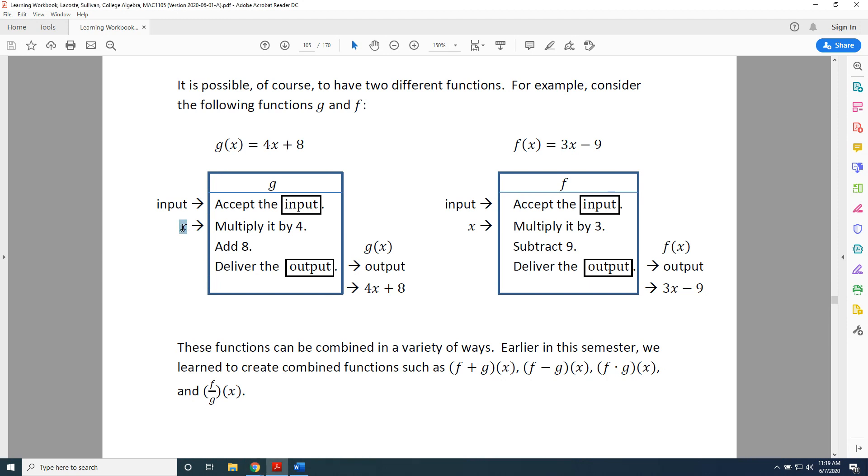The input is x. The name of the function is g. When an input x goes into a function g, the following instructions are applied. Accept the input, multiply it by 4, which would give us 4x, add 8, which would give us 4x plus 8, then deliver the output.